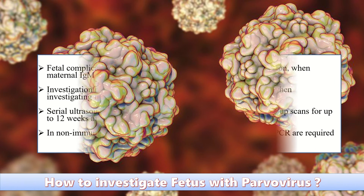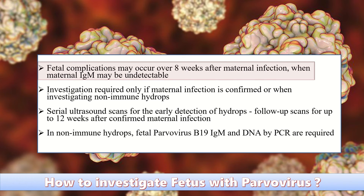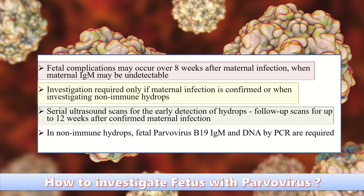Fetal infections may occur up to eight weeks after maternal infection, when maternal IgM may be undetectable. Investigation is required only if maternal infection is confirmed or when investigating non-immune hydrops. Serial ultrasound scans are needed for early detection of hydrops, with follow-up scans for up to 12 weeks after confirmed maternal infection.